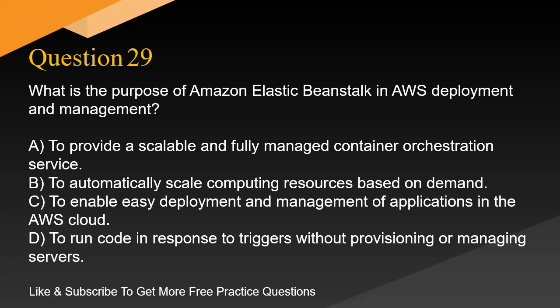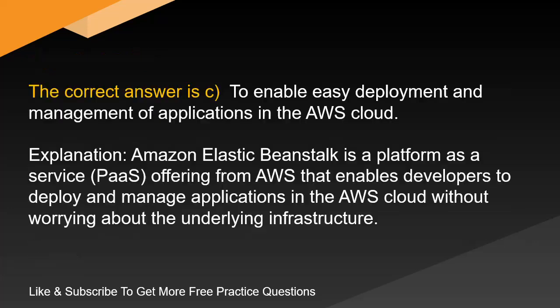Question 29. What is the purpose of Amazon Elastic Beanstalk in AWS deployment and management? A. To provide a scalable and fully managed container orchestration service. B. To automatically scale computing resources based on demand. C. To enable easy deployment and management of applications in AWS cloud. D. To run code in response to triggers without provisioning or managing servers. The correct answer is C: To enable easy deployment and management of applications in AWS cloud.